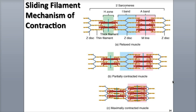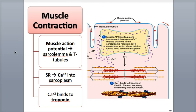This results in a compounding effect. As the sarcomeres shorten, the muscle fiber shortens, which leads to the entire muscle shortening. The muscle contraction cycle is a repeating series of events that allows the filaments to slide past each other, resulting in muscle contraction.